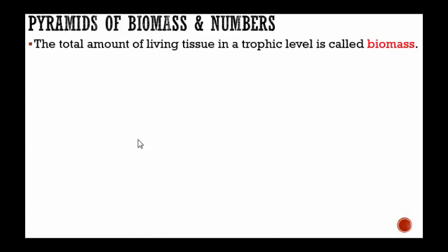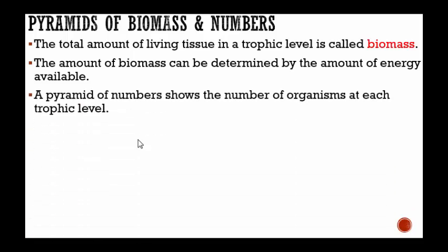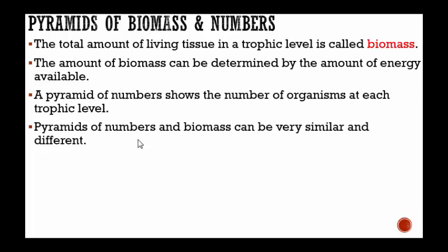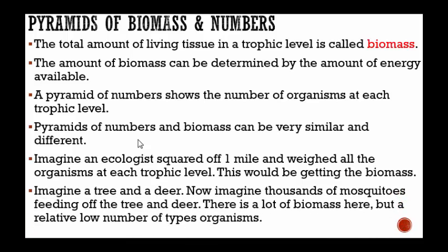Pyramids of biomass and numbers — the total amount of living tissue at a trophic level is called the biomass, and the amount of biomass can be determined by the amount of energy available. A pyramid of numbers shows the number of organisms at each trophic level. They can be similar or very different. For example, imagine a tree, a deer, and thousands of mosquitoes feeding off both. There's a lot of biomass but a relatively low number of organism types — only three organisms, yet thousands of mosquitoes create a very high biomass.